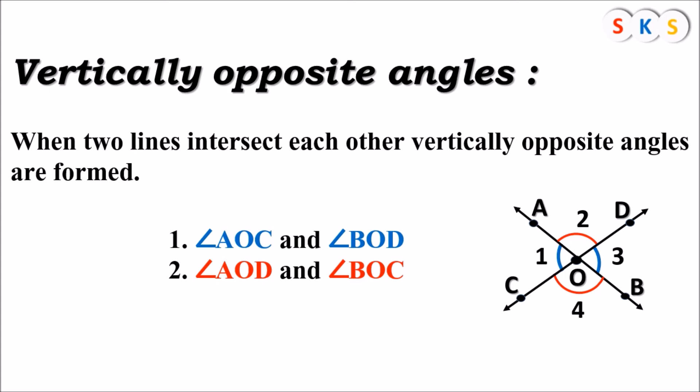So, angle AOC and angle BOD is one pair of vertically opposite angles. Angle AOD and angle BOC is the next pair of vertically opposite angles.